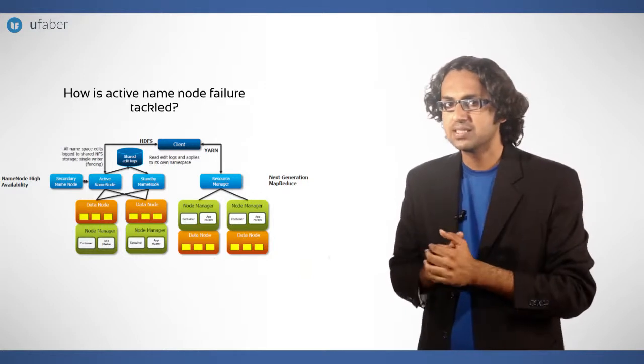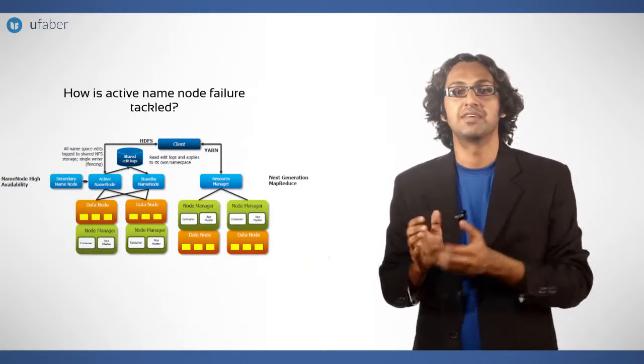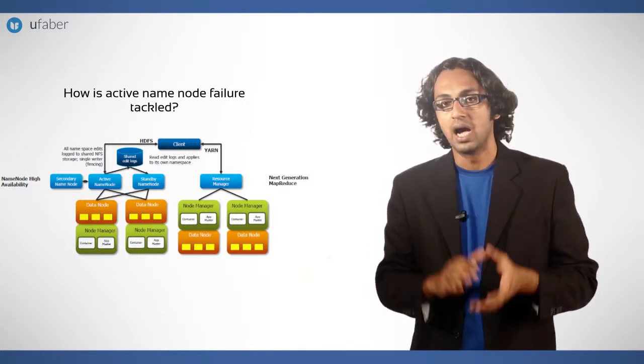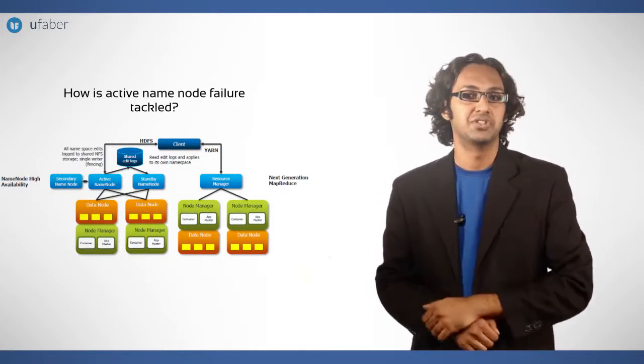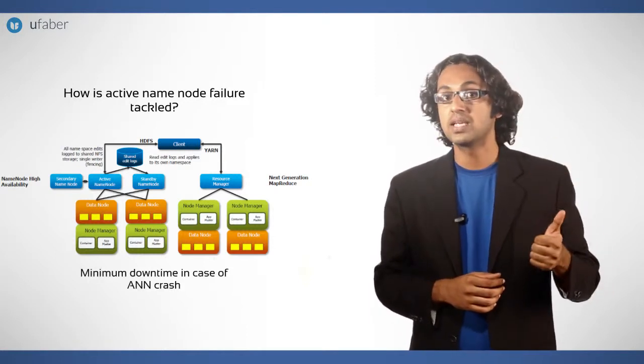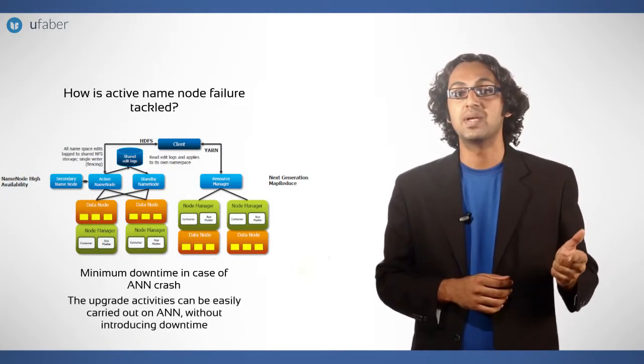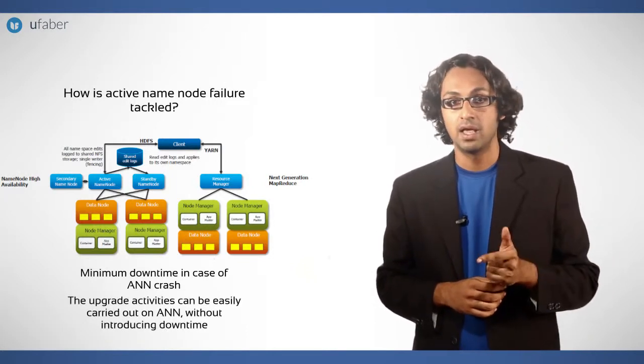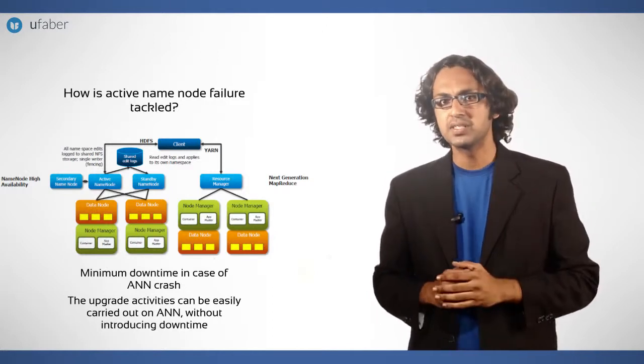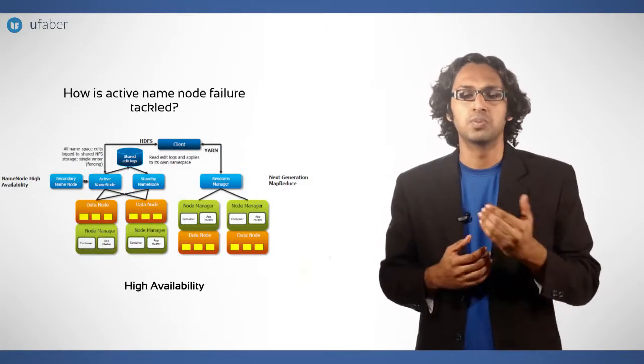The failover in this case is hot, which provides more reliable working of HDFS. As two name nodes are available, the Hadoop cluster is highly efficient. It provides minimum downtime in case of ANN crash. The upgrade activities can be easily carried out on ANN without introducing downtime. This feature is known as high availability. It improves the reliability of Hadoop cluster.